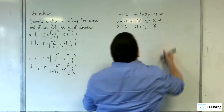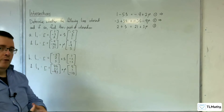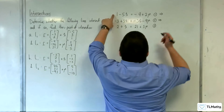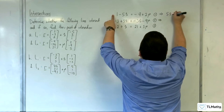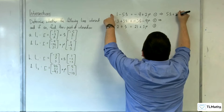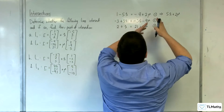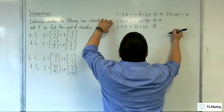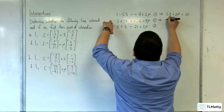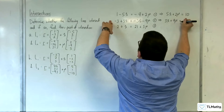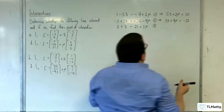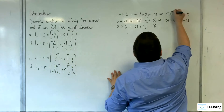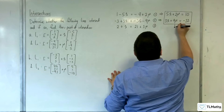Now I'm going to rearrange and simplify the first two equations, solve those, then check in the third. So I'll add 5λ to both sides and reorganise. So 5λ plus 2μ, adding 9 to both sides, is equal to 10. And here we're going to add 9μ to both sides, so 3λ plus 9μ, adding 3 to both sides, gives us minus 33.